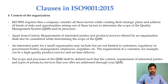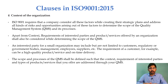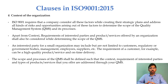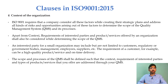Apart from context, the requirements of interested parties and the products or services offered by an organization shall also be considered while determining the scope of the QMS. For a small organization, interested parties may include but are not limited to customers, regulatory or government bodies, management, employees, and suppliers. The requirement of a customer can be a high quality product or service or on-time delivery. Hence, the scope and processes of the QMS shall be defined such that the context, requirements of interested parties, and types of products or services offered are all addressed.